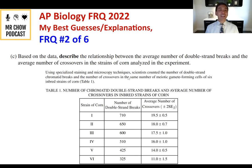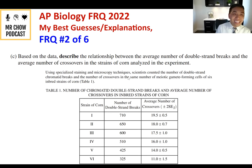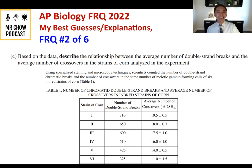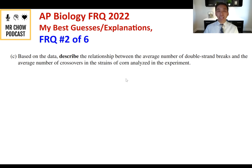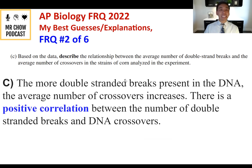Question 2C: Describe the relationship between the average number of double strand breaks and crossovers. The more double strand breaks present in DNA, the more the average number of crossovers increases. There is a positive correlation between the number of double strand breaks and DNA crossovers.